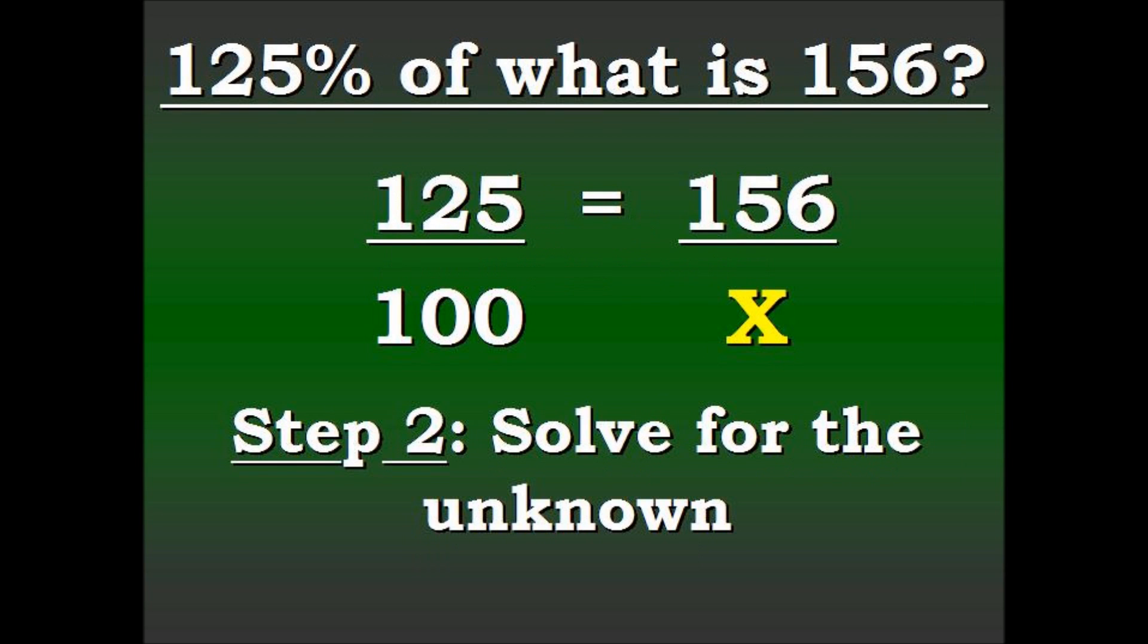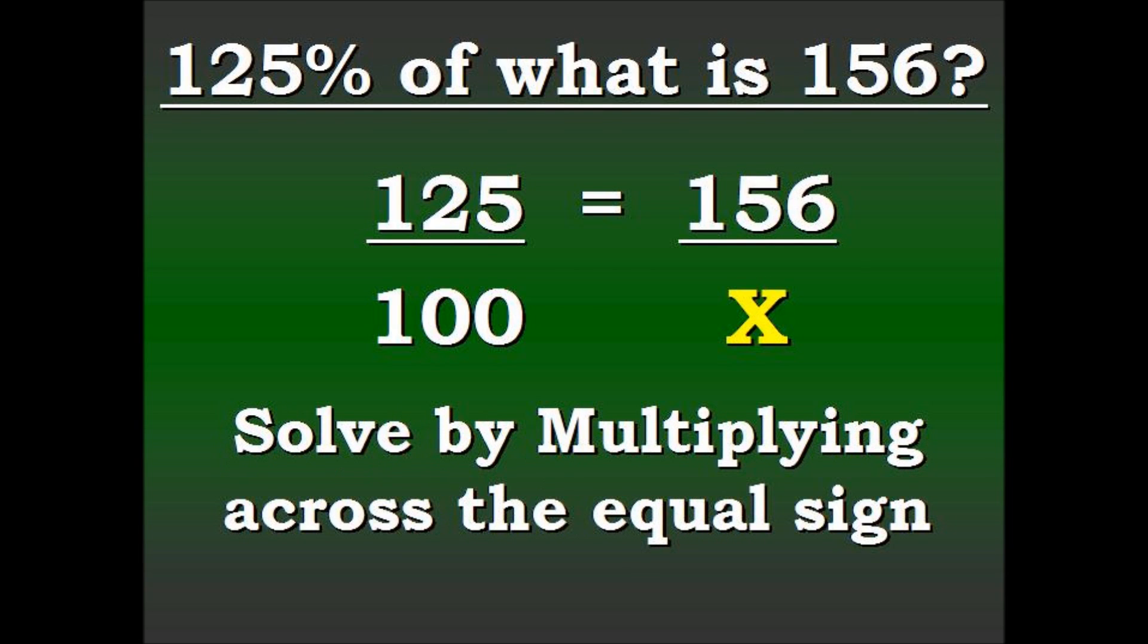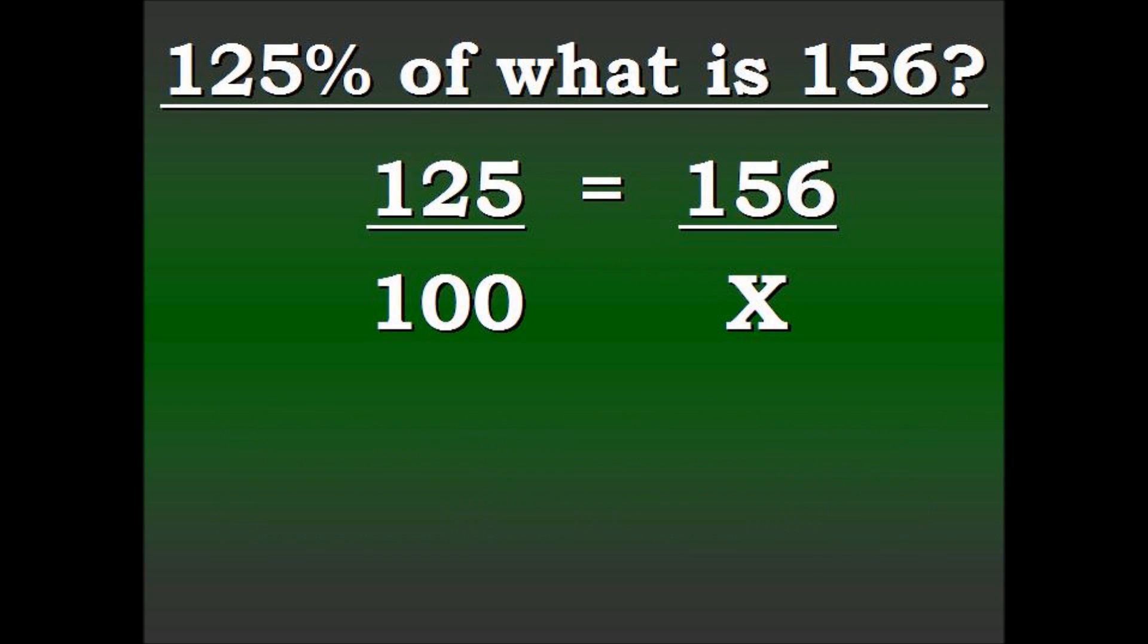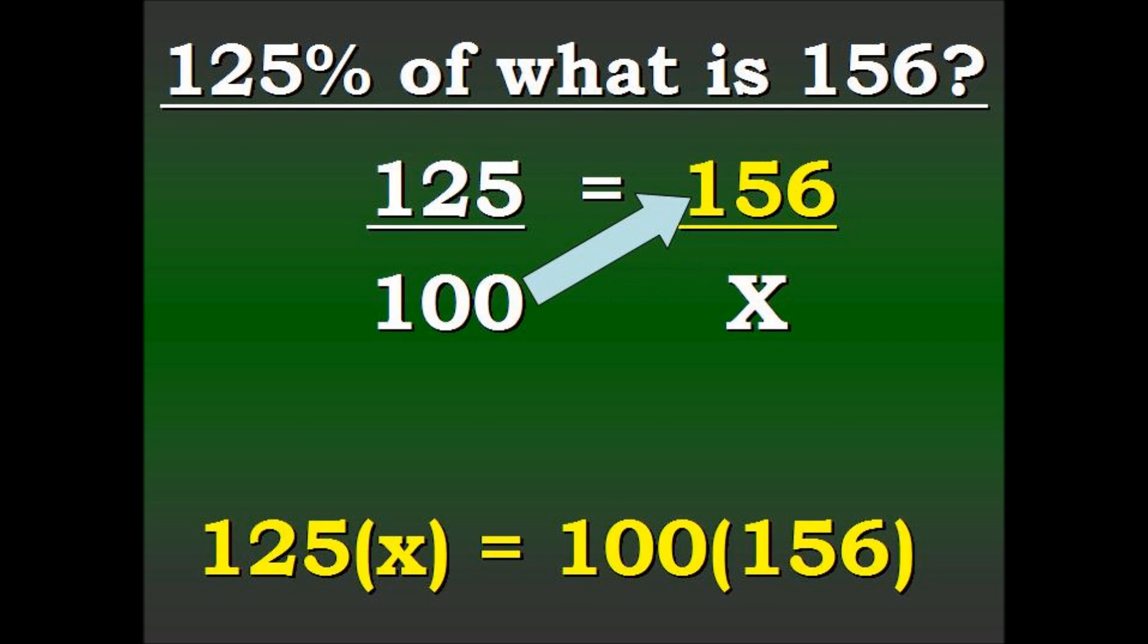Now what we're going to do next is we need to solve for the unknown, and we solve by multiplying across the equal signs. Cross multiplying is just like the arrows are showing here. So we have 125, we're going to multiply that into X, insert our equal sign, and have 100 times 156.